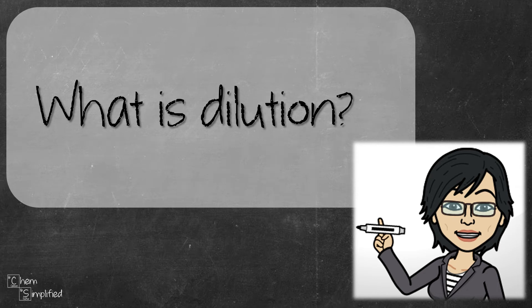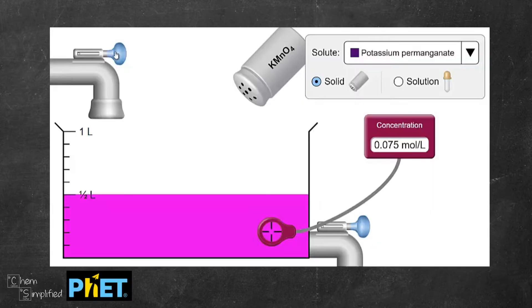We're going to answer the question, what is dilution in this video? Let's just say we happen to have a container filled with potassium permanganate solution. The volume is half a liter and the concentration is 0.075 molar.